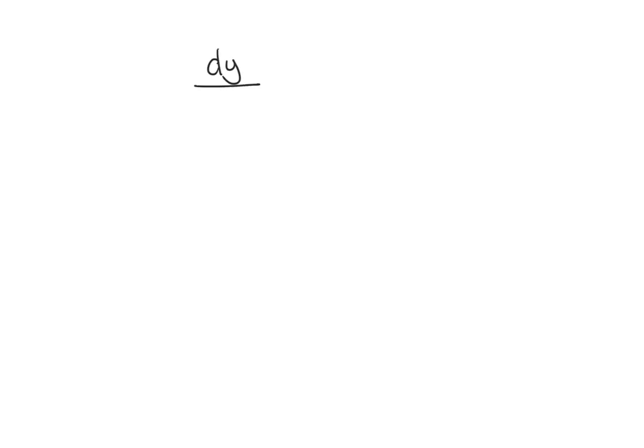In today's lesson, we are finding general solutions using separation of variables. What that basically means is if you start with a differential equation, dy over dx equals 5x squared over 6y squared, we are essentially going to do an antiderivative of implicit equations. The method is called separation of variables, and basically what we're going to do is get our variables on opposite sides.